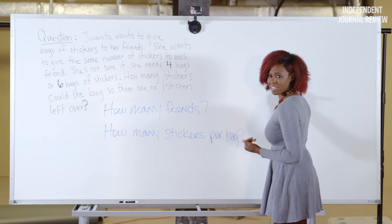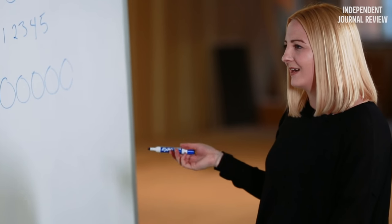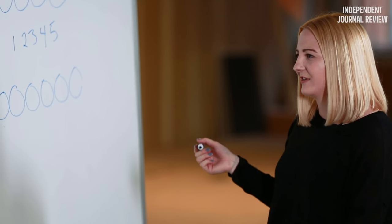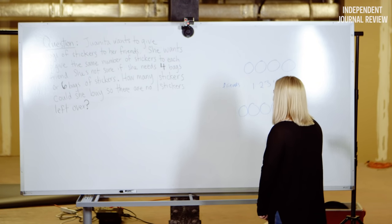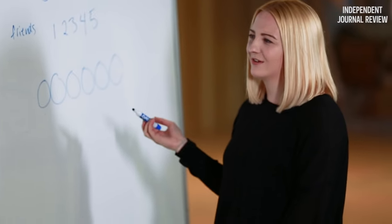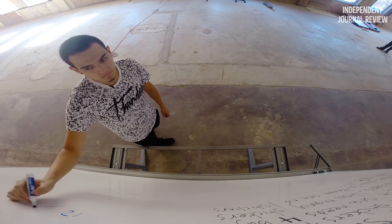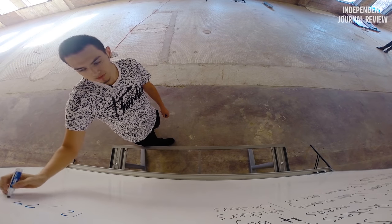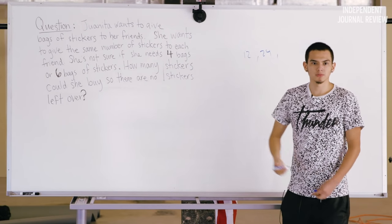Both six and four go into twelve. Twenty-four? So she's making the four bags or six bags — she's not buying four bags or six bags. So if she's buying twelve stickers, you can divide four and six into twelve. Twelve, twenty-four, and then every other multiple of four and six.